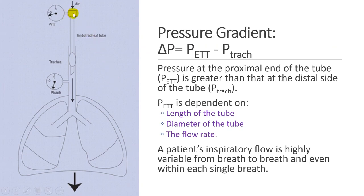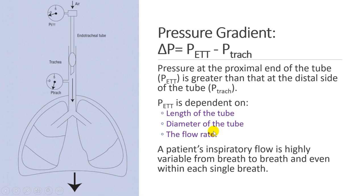If you measure the pressure at the proximal end of the tube and the pressure at the distal end of the tube, you get a difference between these two pressures. This is what the machine tracks, and this pressure difference is used to deliver a pressure support equal to that difference. The endotracheal tube pressure depends on the length and diameter of the tube and the flow rate. While length and diameter are fixed, the flow rate is highly variable from breath to breath and even within each single breath.